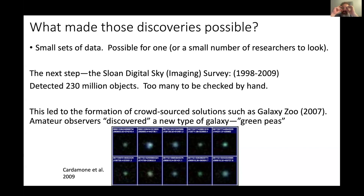Galaxy Zoo, where amateur observers looked at images to find peculiar and interesting objects, led to the discovery of a new type of galaxy — galaxies with very high star formation rates that actually appear green in images. People didn't think green galaxies were possible, but they're green because they're forming stars at such a high rate that they emit most of their light through the line radiation of doubly ionized oxygen, a forbidden transition visible through the entire galaxy. This discovery changed how we saw extreme star formation.